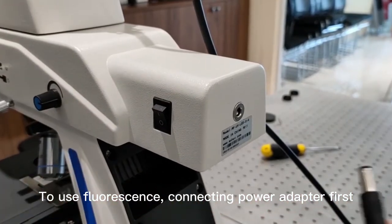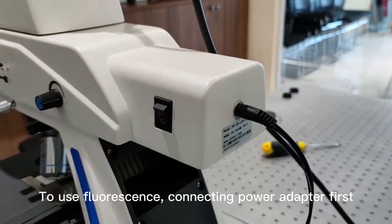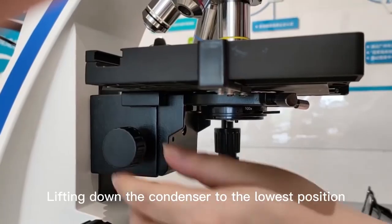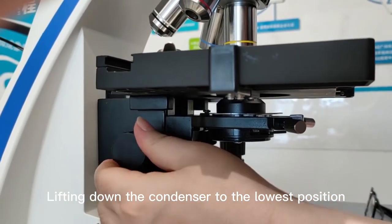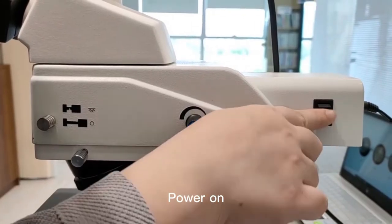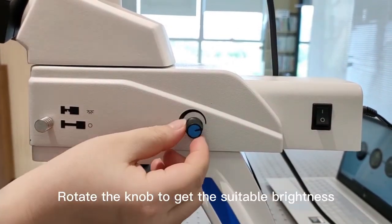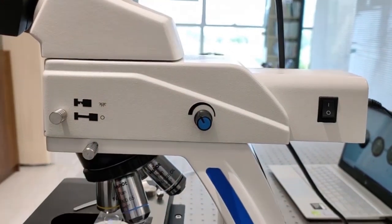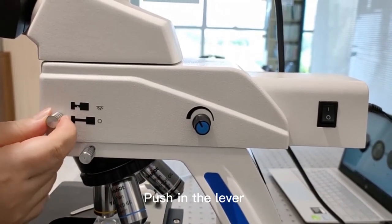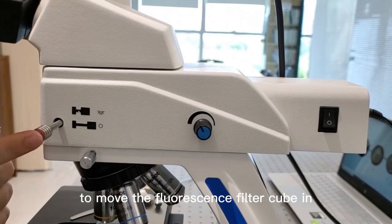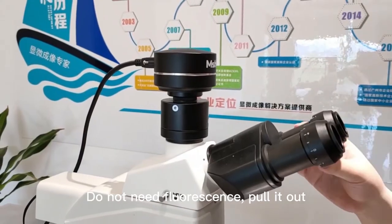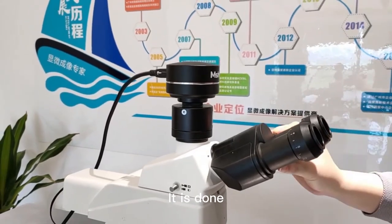To use fluorescence, connect the power adapter first and close the bottom bright field light. Lower the condenser to the lowest position. Power on. Rotate the knob to get suitable brightness. Push in the lever to move the fluorescence filter cube into position. When you do not need fluorescence, pull it out. It is done.